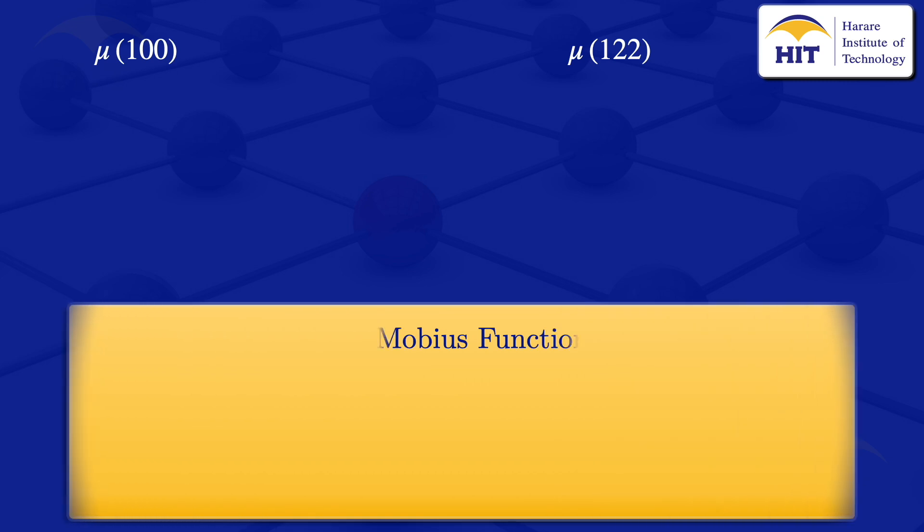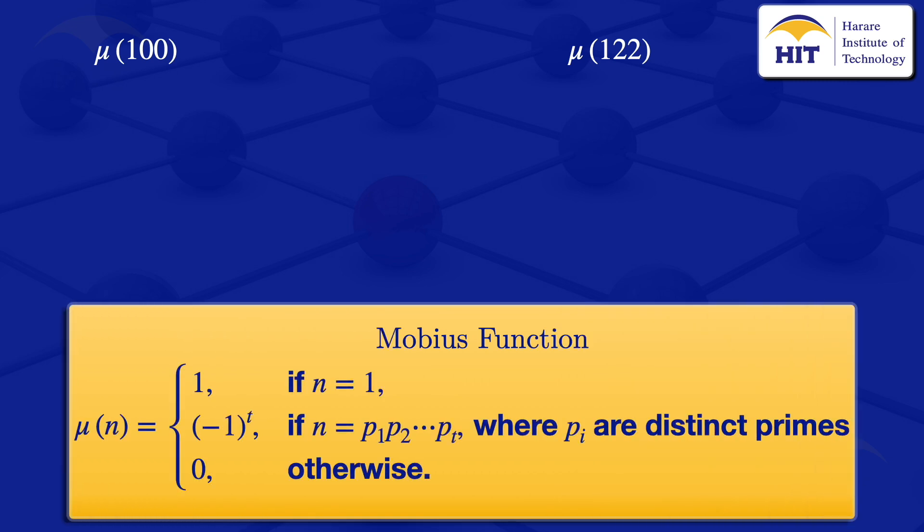The Mobius function is defined as μ(n) which is equal to 1 if n equals 1, minus 1 to the power t if n equals p₁ multiplied by p₂ up to pₜ where the pᵢ's are distinct primes, and 0 otherwise.